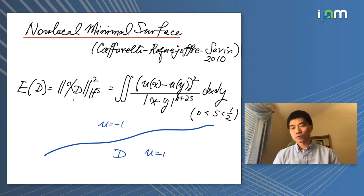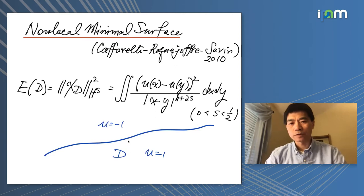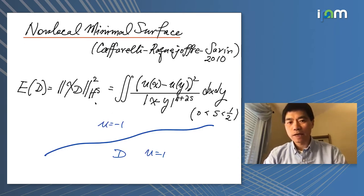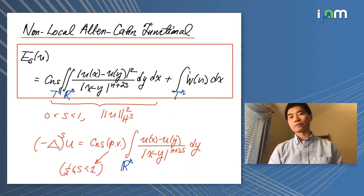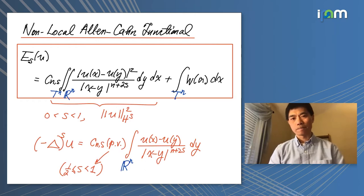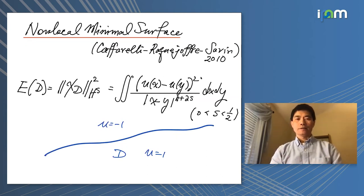There is wide range of recent activity for non-local equations. Two particularly relevant results: first, non-local minimal surfaces were introduced by Caffarelli, Roquejoffre, and Savin in 2010. They define the surface energy as this H^s norm for the characteristic function of a set. The non-local term serves only to constrain u to be one and minus one. There are many regularity results and properties of non-local minimal surfaces that people continue to study.